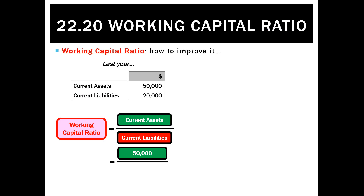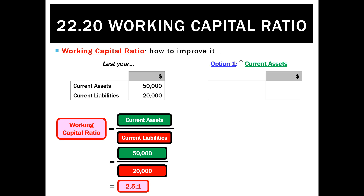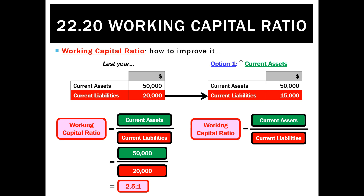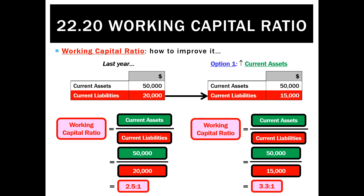The other way to improve the ratio is to lower current liabilities while maintaining current assets. If the ratio last year was 2.5 to 1, this year we could reduce current liabilities so that current assets of $50,000 divided by $15,000 gives a ratio of 3.3 to 1. Liquidity has improved and the business can well and truly meet its short-term debts as they fall due.